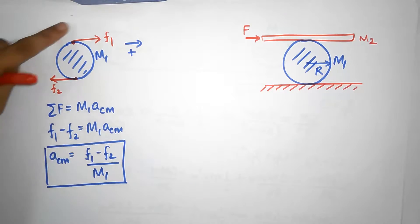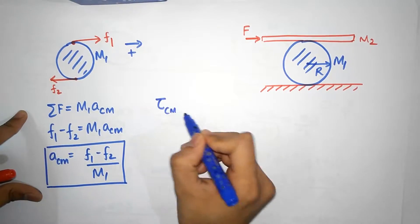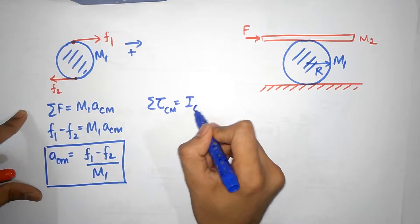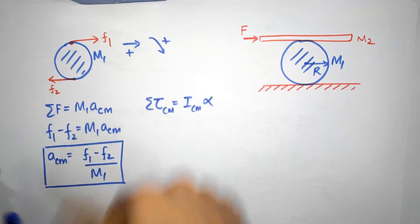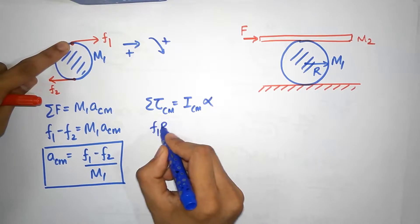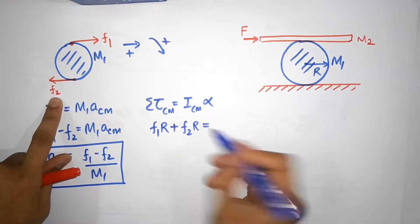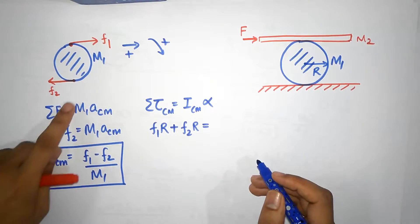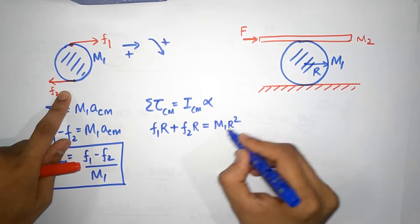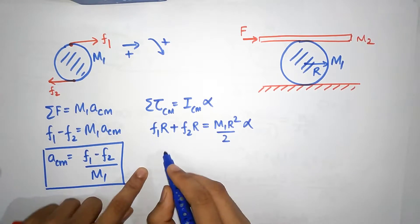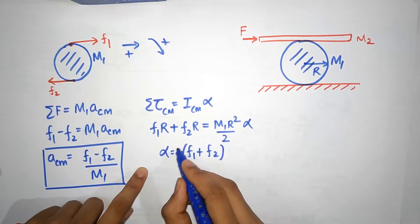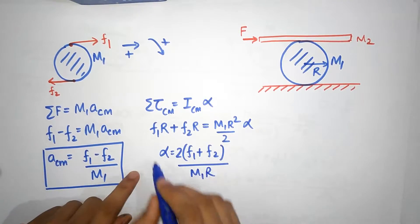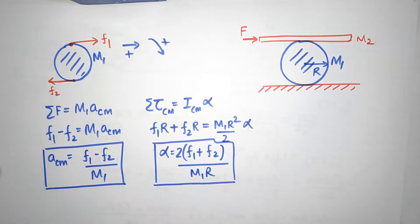Now for the torque equation about the center of mass: sigma tau equals I_cm times alpha. Taking clockwise as positive, f1 produces torque f1*r and f2 also produces torque f2*r in the same direction. The moment of inertia of a solid cylinder is m1*r²/2. So (f1 + f2)*r = (m1*r²/2)*alpha, giving alpha = 2*(f1 + f2)/(m1*r). That's equation two.